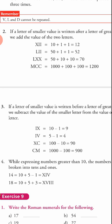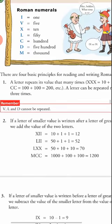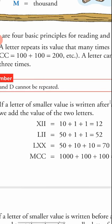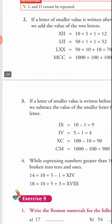Another example is MCC: M is 1000, C is 100, and C is 100 again, so the total is 1200. You can see that all these are formed using only those seven basic alphabets. You just need to learn these basic rules and the seven alphabets.